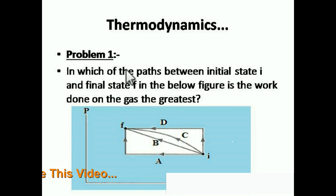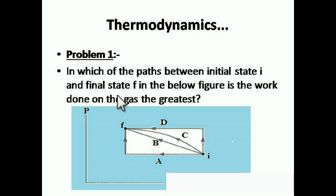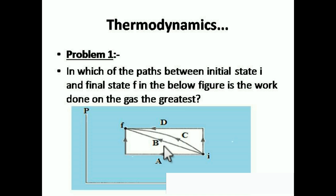This is problem number one. A PV diagram is given with initial state I and final state F. The question asks: which of the paths between initial state I and final state F — paths A, B, C, and D — has the greatest work done on the gas?